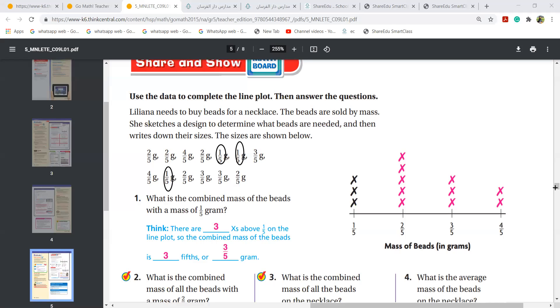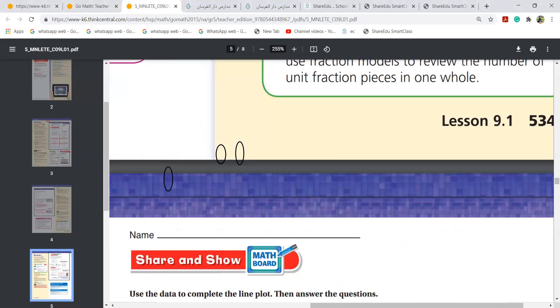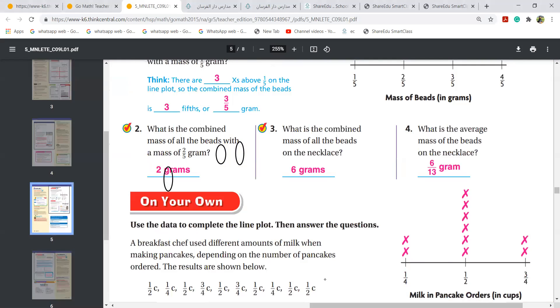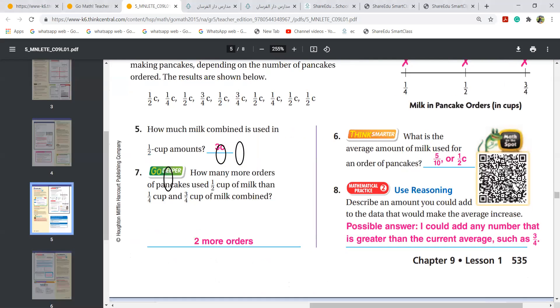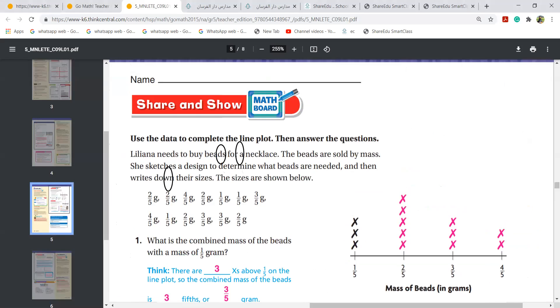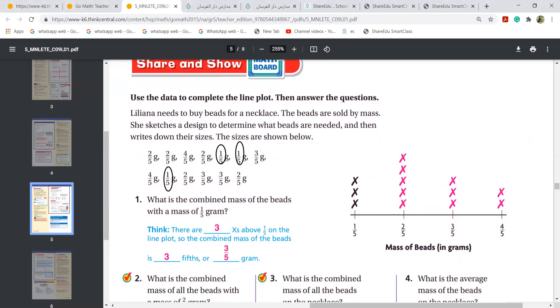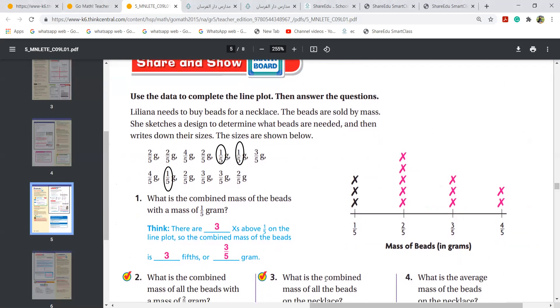We are doing lesson number 9.1, that is line plot, page 535. Question number one here. Liliana needs to buy beads for a necklace. The beads are sold by mass. She sketches a design to determine what beads are needed, then writes down their sizes. Now girls, these sizes: 1 over 5 gram, 1 over 5 gram, there are 3 so I put 3 crosses.